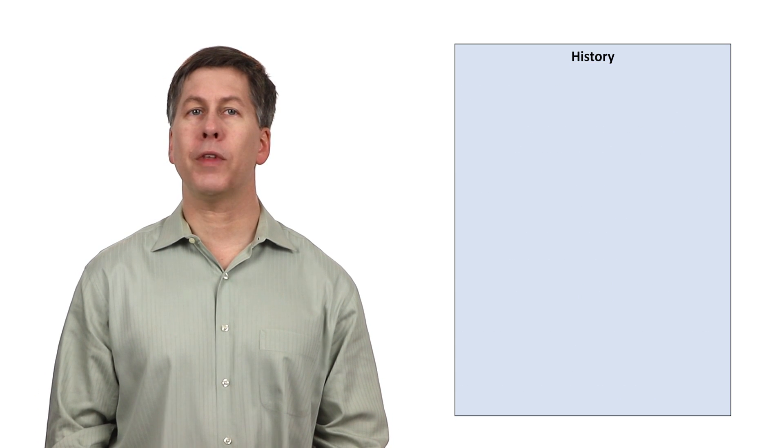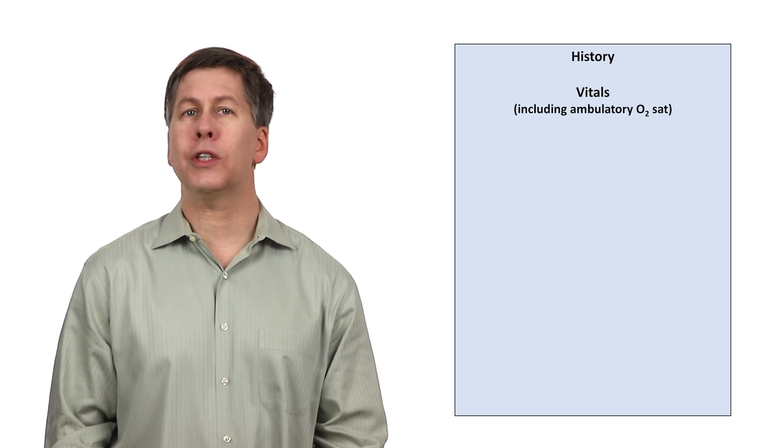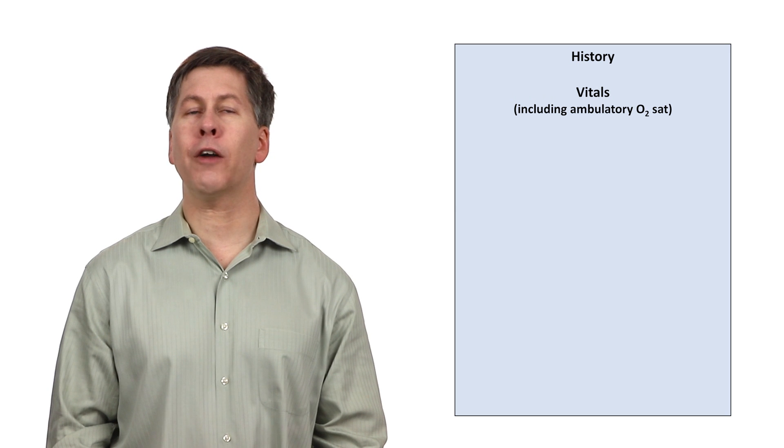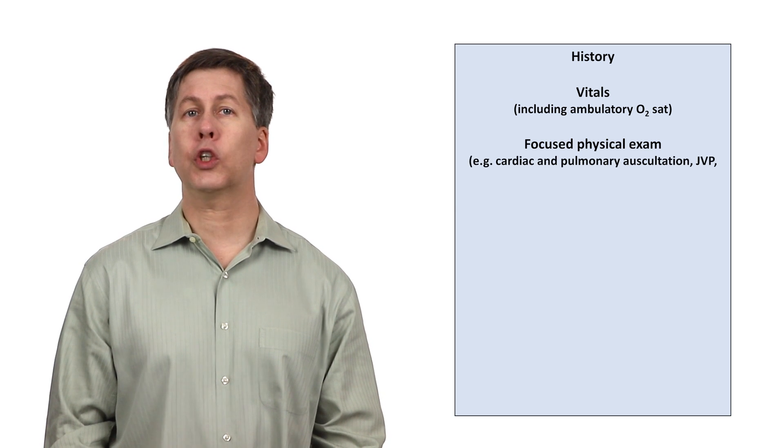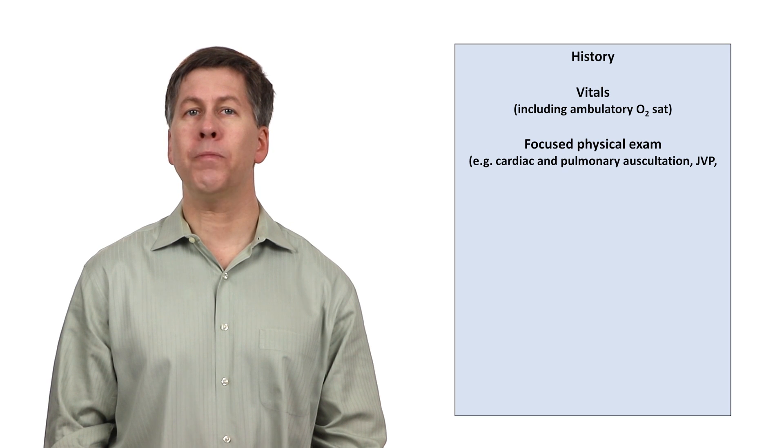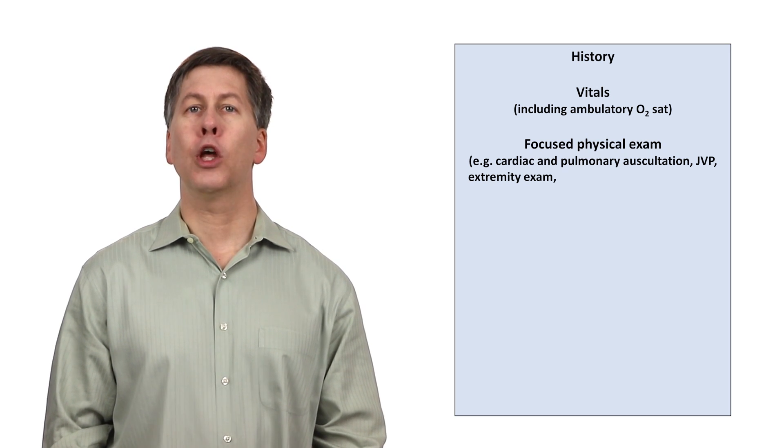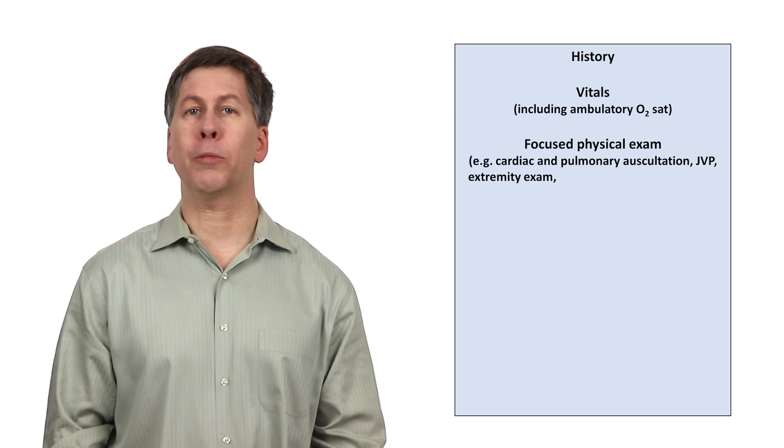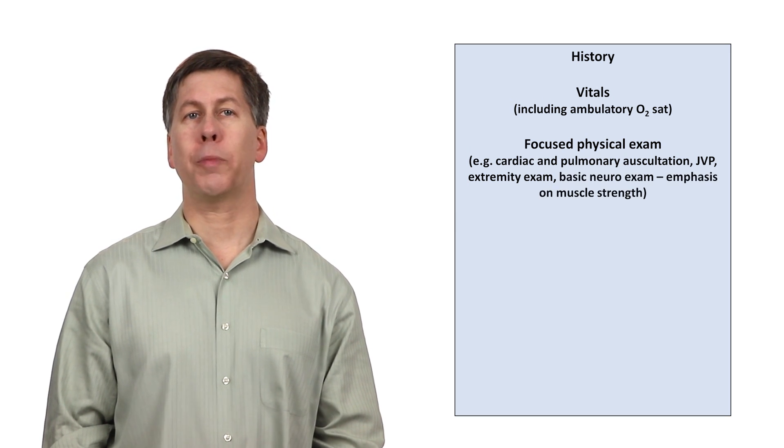Moving on to the exam, in addition to routine vitals, also measure an ambulatory oxygen saturation, which is just an O2 sat after the patient has been walking around for a few minutes. The physical exam should otherwise focus on the heart and lungs, which could include a bedside ultrasound looking at the overall left ventricular function and the appearance of the IVC. An extremity exam should also be performed looking predominantly for lower extremity edema, but also looking for clubbing, which can be a sign of lung cancer or severe pulmonary fibrosis. A basic neuro exam focusing on muscle strength is also indicated in most patients.